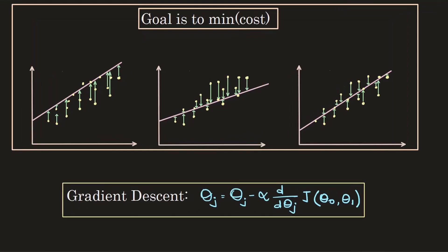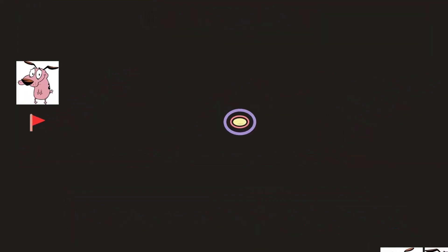Today we are going to learn about gradient descent, an algorithm that helps you minimize the loss for your machine learning model. But before we get into the complications and technicality of this topic, let's get started with a slightly interesting and fun approach.